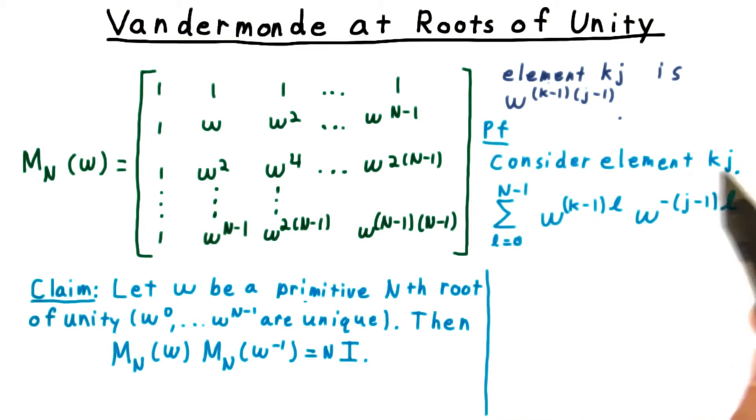For the proof, consider the kj-th element of the product. For this, we're multiplying the k-th row of M sub n of omega with the j-th column of M sub n of omega inverse.